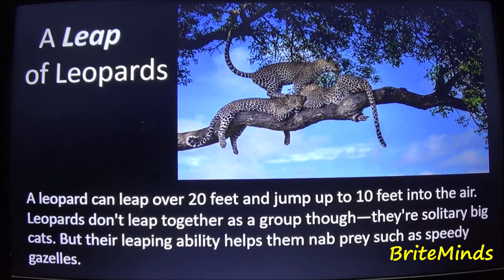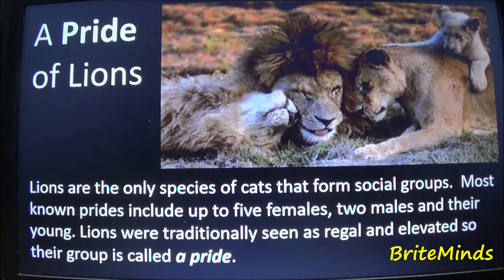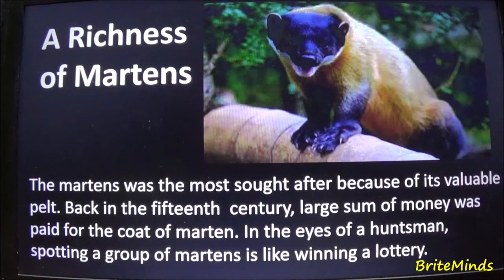A pride of lions: lions are the only species of cats that form social groups. Most known prides include up to five females, two males, and their young. Lions were traditionally seen as regal and elevated, so their group is called a pride. A richness of martens: the marten was the most sought-after animal because of its valuable pelt back in the 15th century.